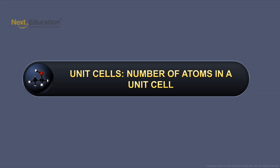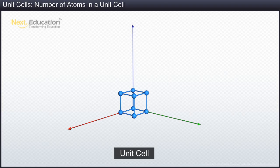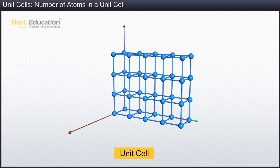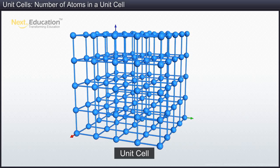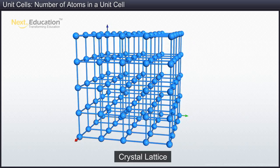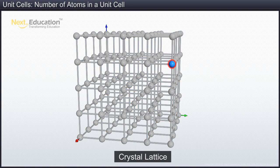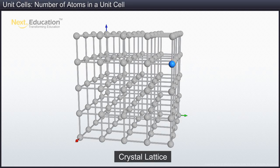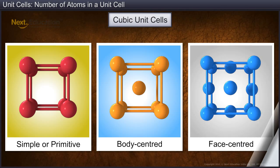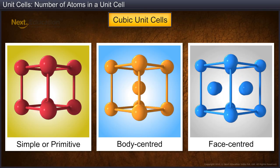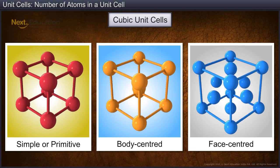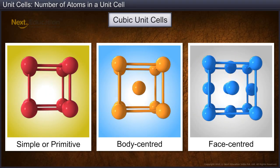In this module, you will learn about the number of atoms in a unit cell. You already know that every crystal lattice is made of an infinite number of unit cells, and every lattice site is occupied by a constituent particle that may be an atom, an ion, or a molecule. Now, let's examine what portion of each particle belongs to a particular unit cell. Consider three types of cubic unit cells, and for the sake of simplicity, assume that the constituent particle is an atom.